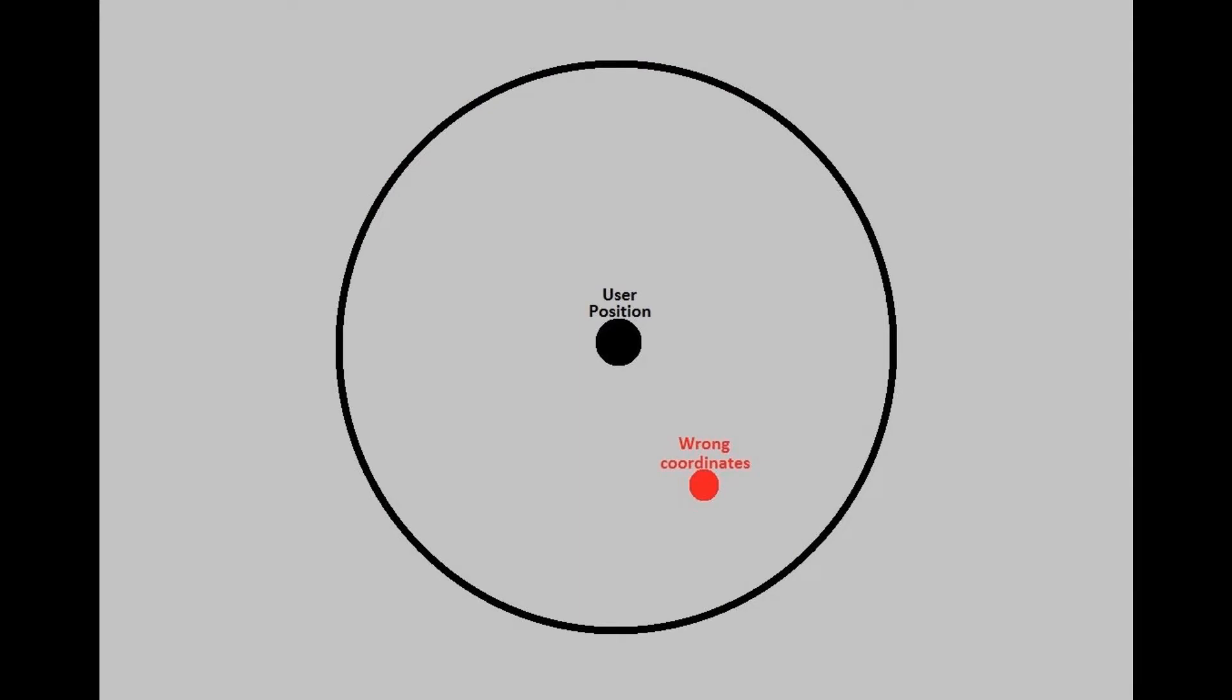But there is a problem here. The phone's GPS isn't powerful enough to calculate coordinates accurately, and it usually fluctuates.